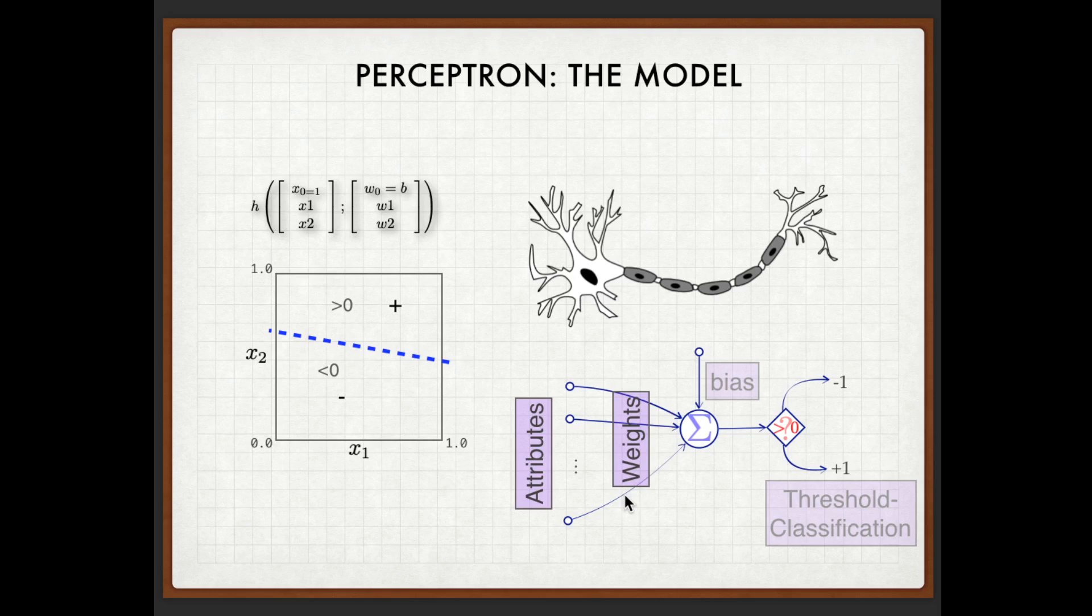This simple computational model, we are pretty sure, is the basic unit that's underlying the super successful deep learning methods. And according to the state-of-the-art research, we pretty much believe that it's also the computational model behind biological neuron computing. But this is still an open research problem.